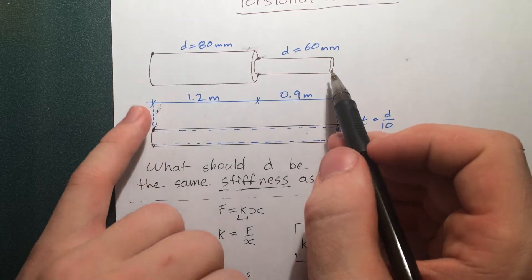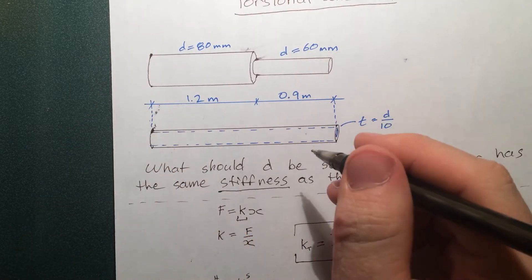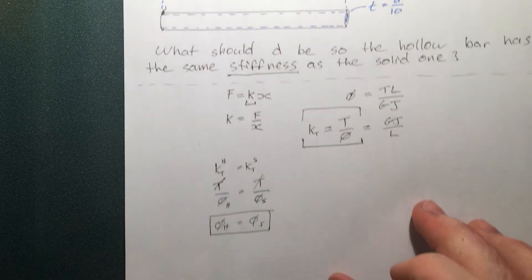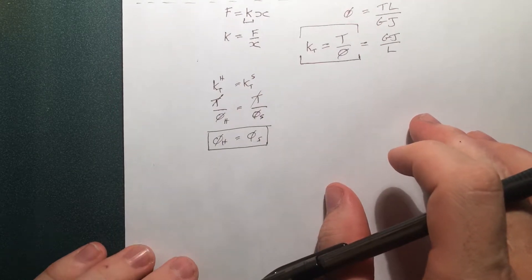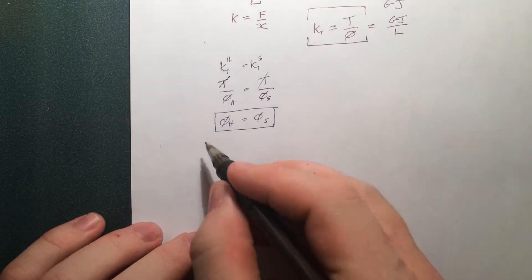Such as, we're going to imagine it's got an arbitrary torque on the end. Well, that's going to cancel out. We're going to imagine that they're made out of the same material. That's going to cancel out as well. So let's move into finding the twist of the solid one, first of all.